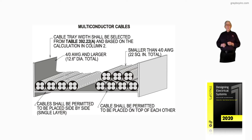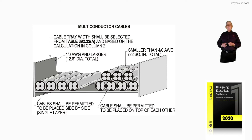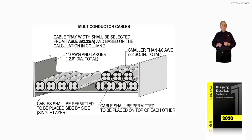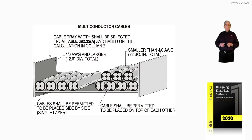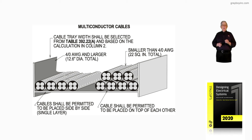You have number 4 or larger conductors illustrated there, and when it was all added up, we had a 12.6 diameter total. That's the diameter of each cable that contains multiple conductors inside the jacket.